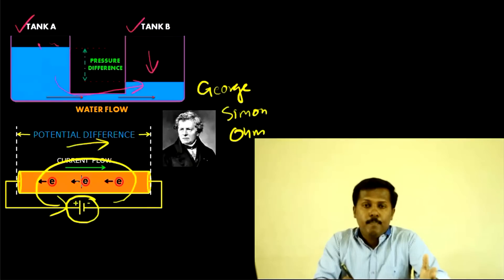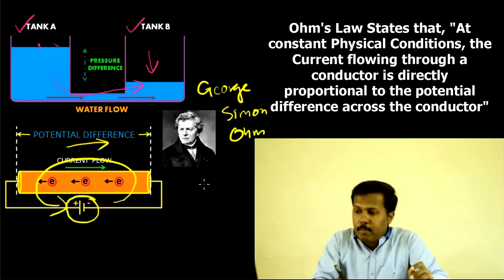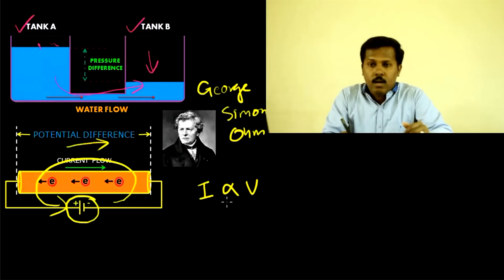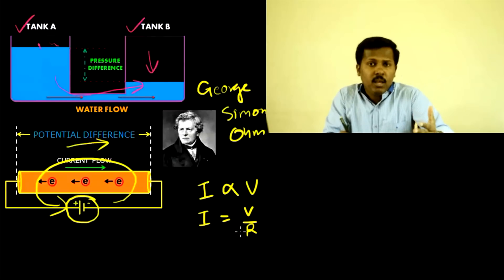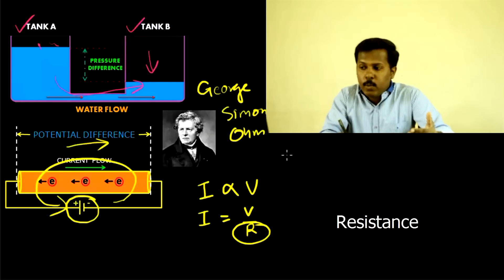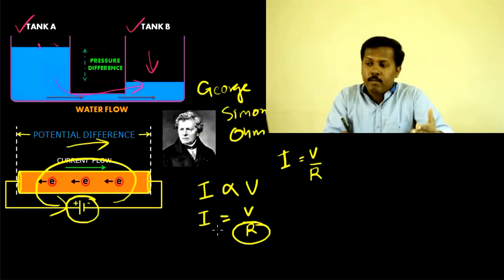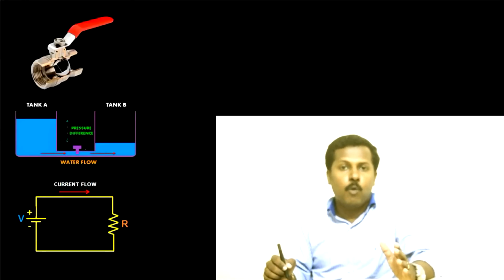So Ohm's Law states that at constant physical conditions, the current flowing through a conductor is directly proportional to the potential difference across the conductor. Mathematically, the current I is directly proportional to V. We remove the proportionality sign by introducing resistance R, giving us I = V/R, where V is the voltage or potential difference across the conductor and R is the resistance of the conductor.